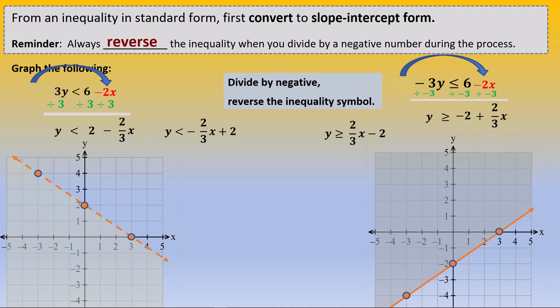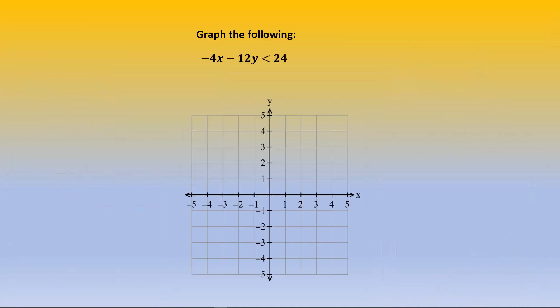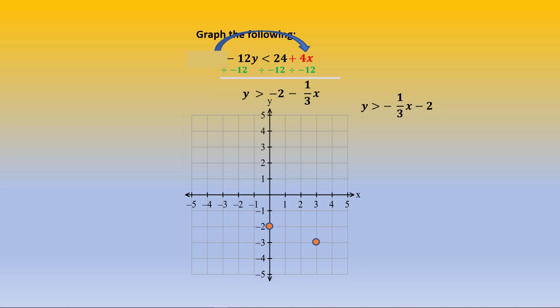Let's graph one more: negative 4x minus 12y less than 24. Now, if you're thinking we're going to end up reversing this, you are correct, because the y term has a negative coefficient. We divide all parts by negative 12, and we end up with y greater than negative 2 minus 1 over 3x. Rearrange into slope-intercept form. Locate the negative 2, go down 1 over 3 — even go backwards — draw a dashed line, and we shade above the region because it's greater than.